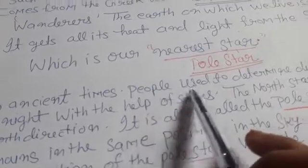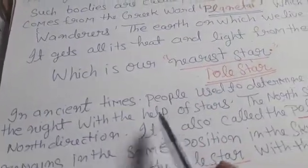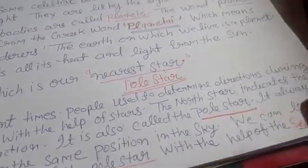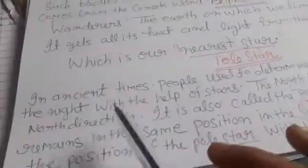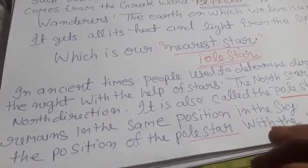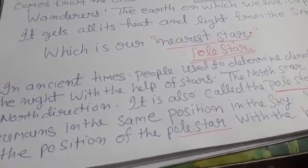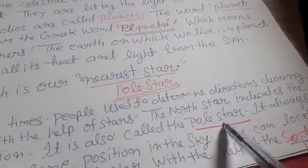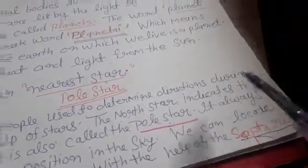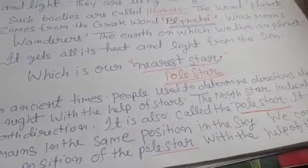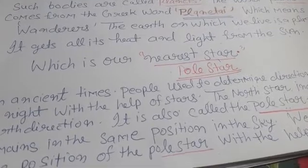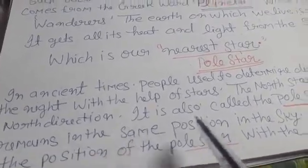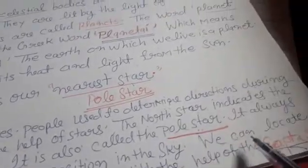In ancient times, people used to determine direction during the night with the help of stars. The north star indicates the north direction. North stars के द्वारा north direction का पता चलता था. It is also called the pole star. The pole star always remains situated in the same position in the sky. Pole star की ये significance है कि वो आकाश में एक ही जगह पे हमेशा स्थित होता है. We can locate the position of the pole star with the help of Sapt Rishi.